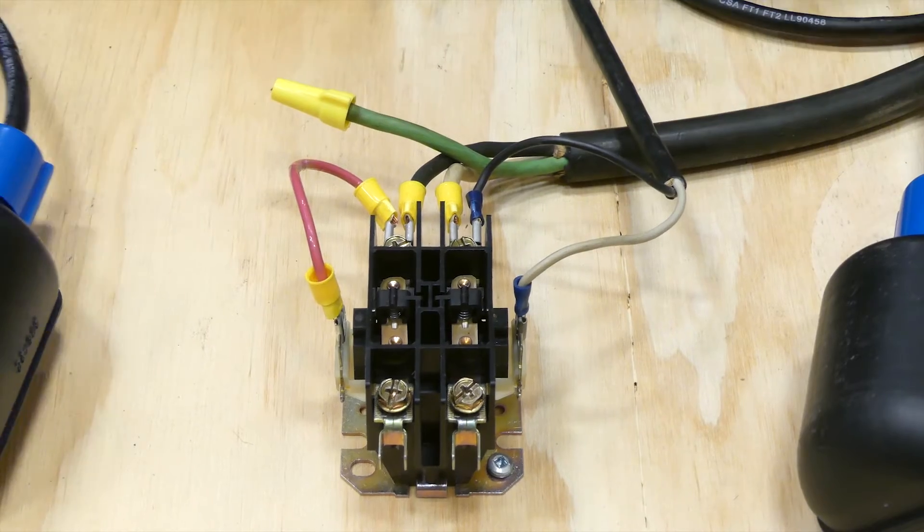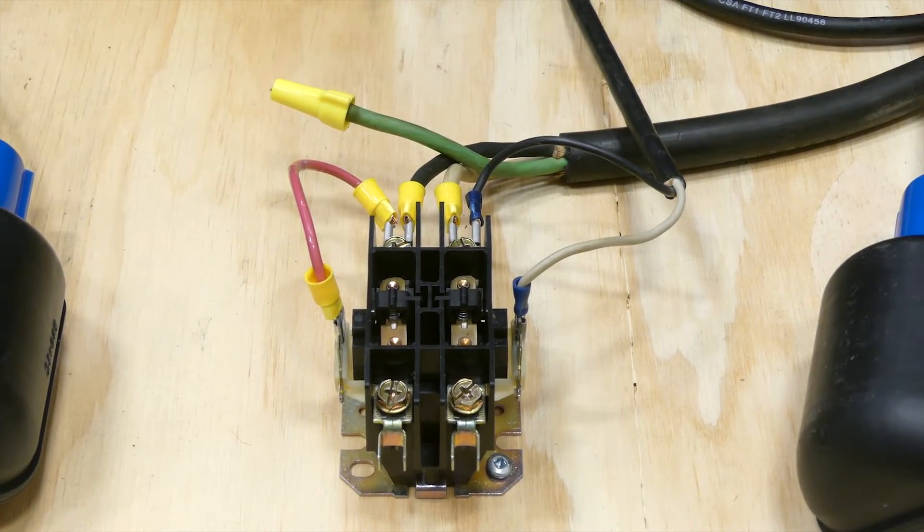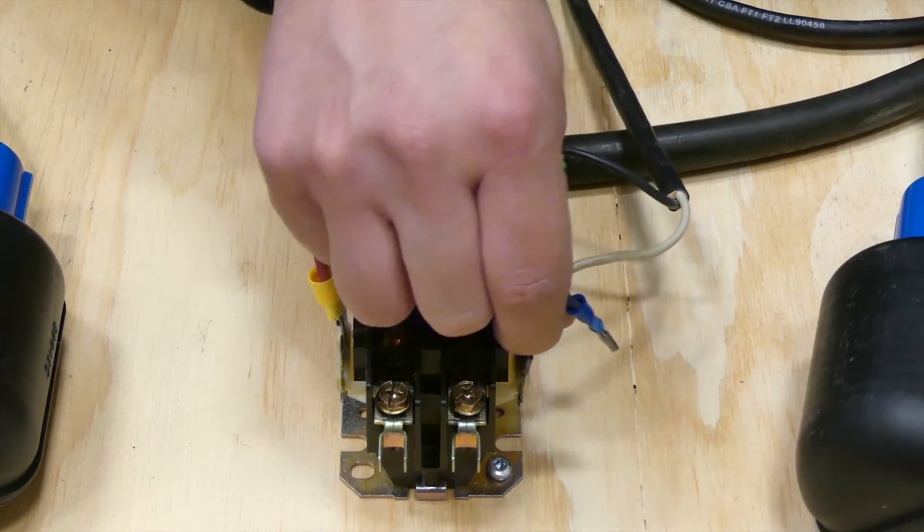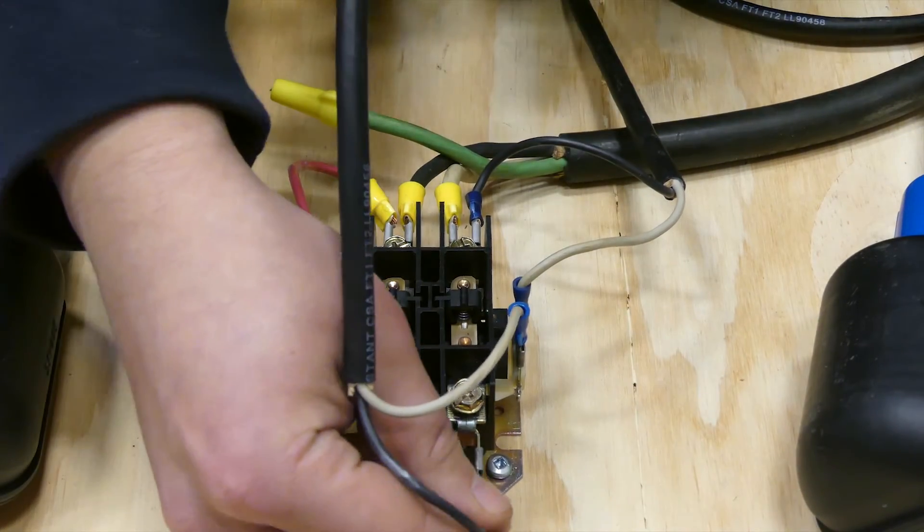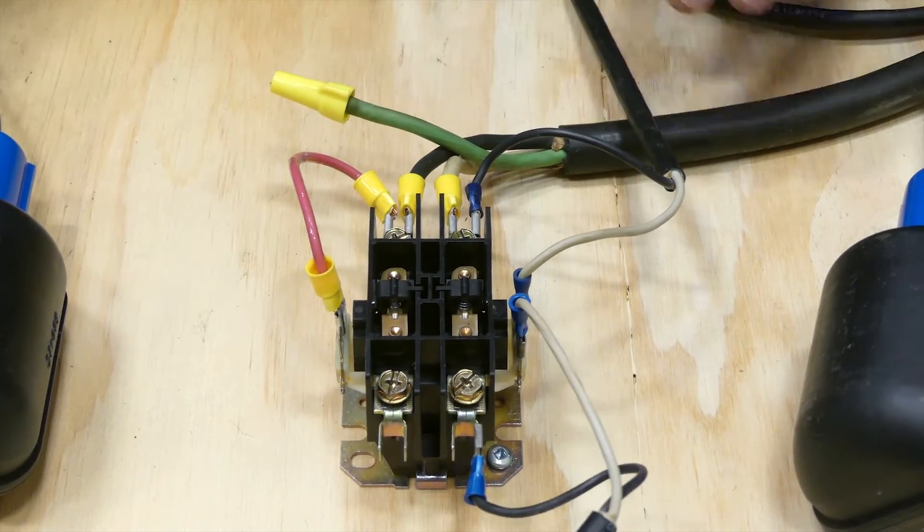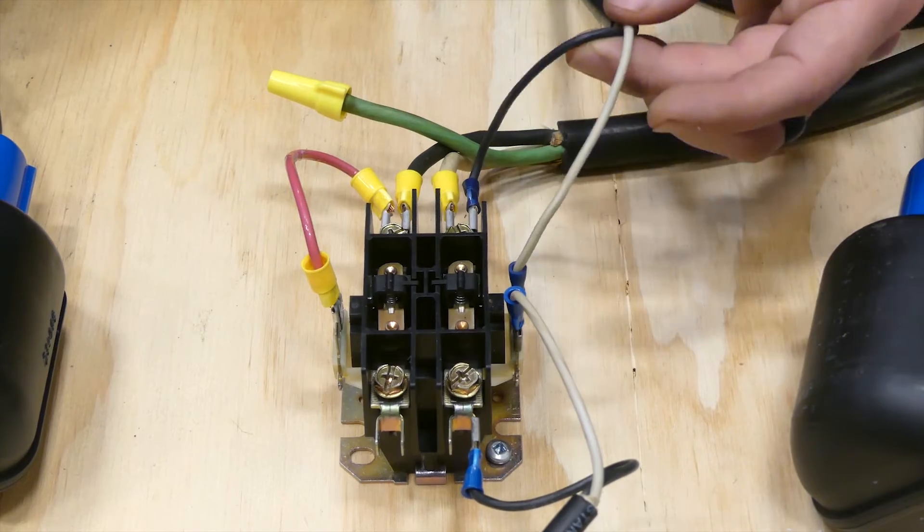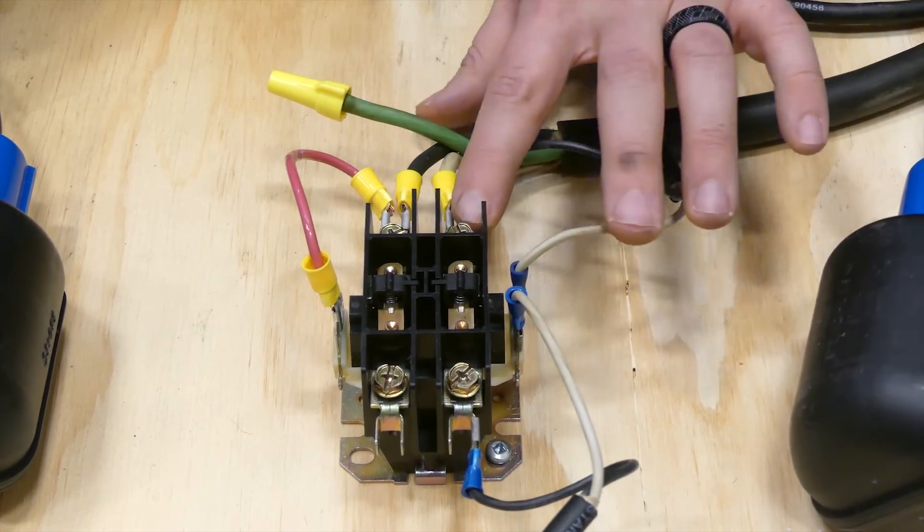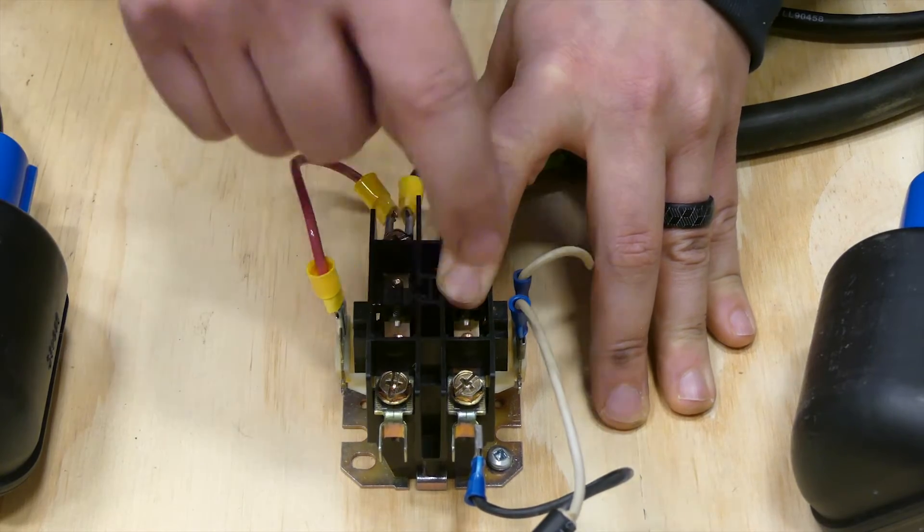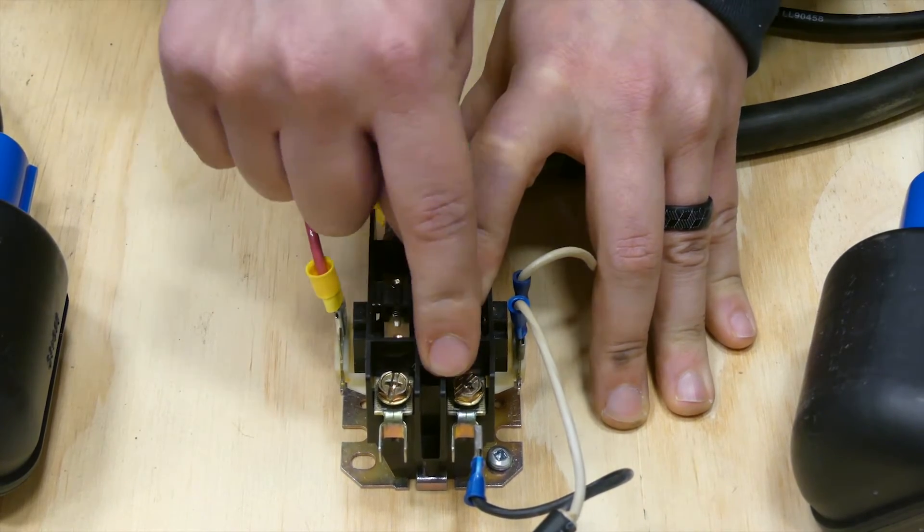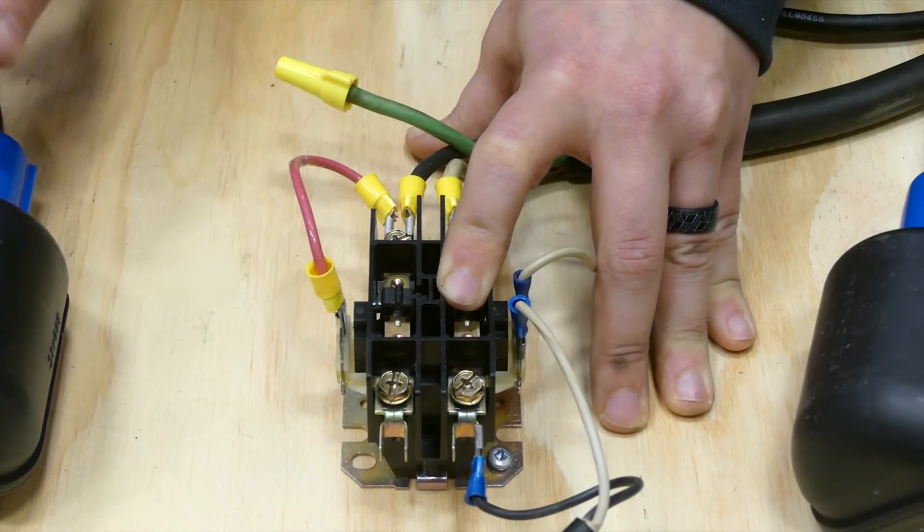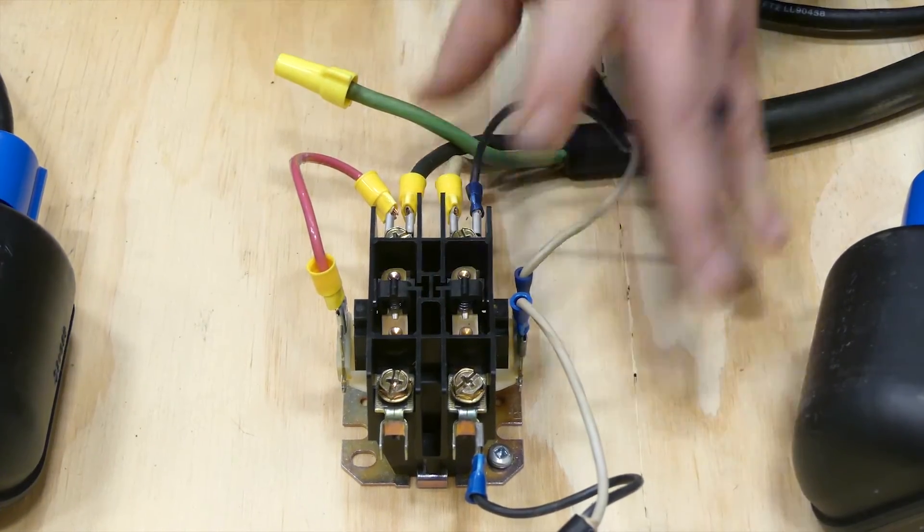Where things get a little bit different is the second float switch is going to be located just like this. What's going to happen is when this float switch closes the contactor initially, the power will be coming down through this part of the coil. So this float switch will then be able to send voltage to the coil until this switch opens up. Let's show you that in action real quick.